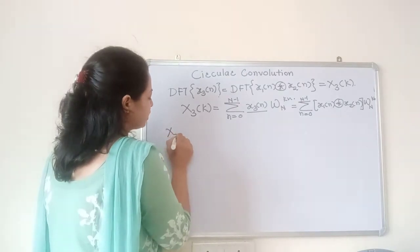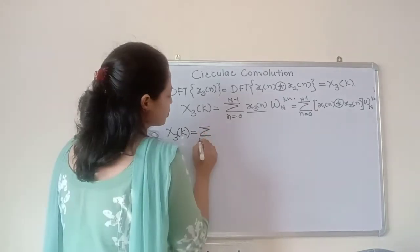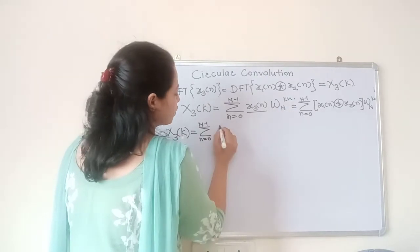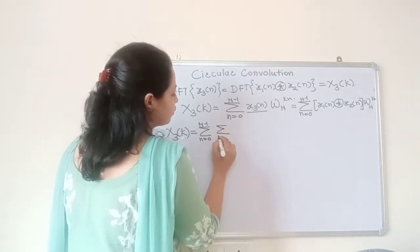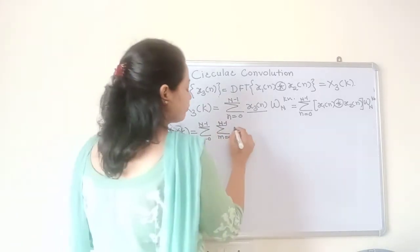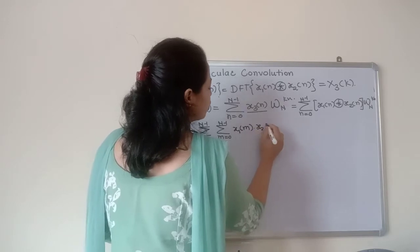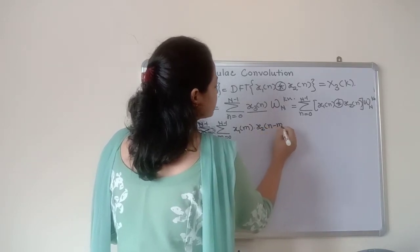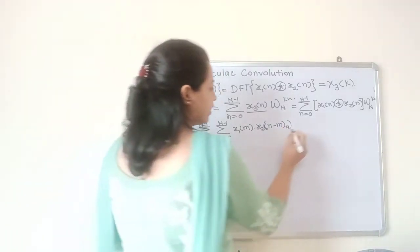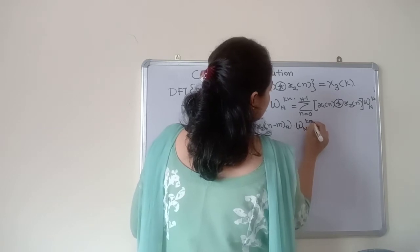So X3 of k is equal to the summation n varying from 0 to N minus 1, and putting in the definition of circular convolution: m varying from 0 to N minus 1, x1 of m into x2 of n minus m which is circularly periodic with period capital N, times the twiddle factor omega N raised to kn.